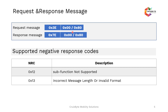The response will be 0x7E followed by 0x00 or 0x80 depending on the request. The negative response codes supported in case of a negative response are: NRC 0x12 - sub-function not supported, and 0x13 - incorrect message length or invalid format.